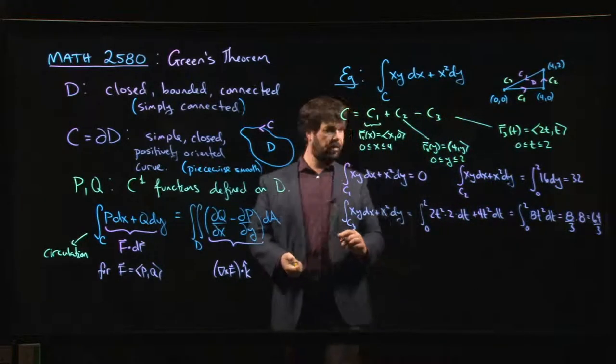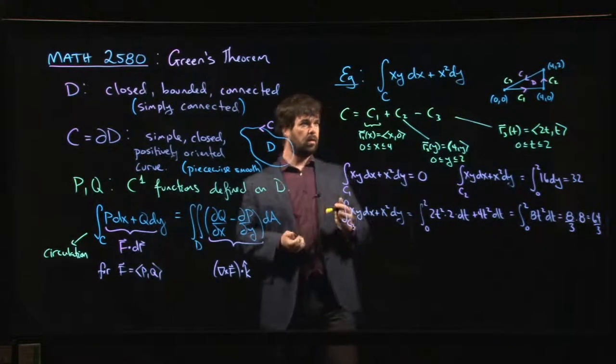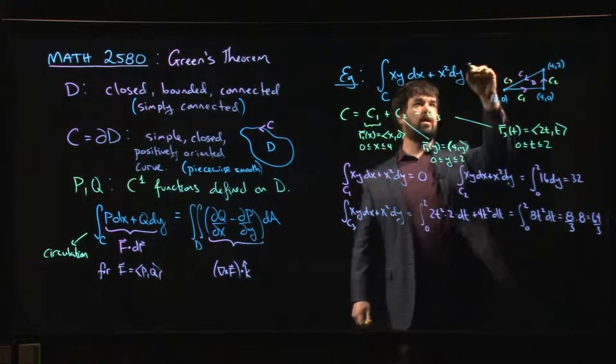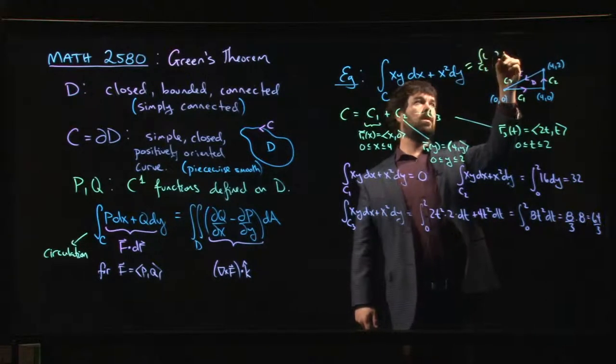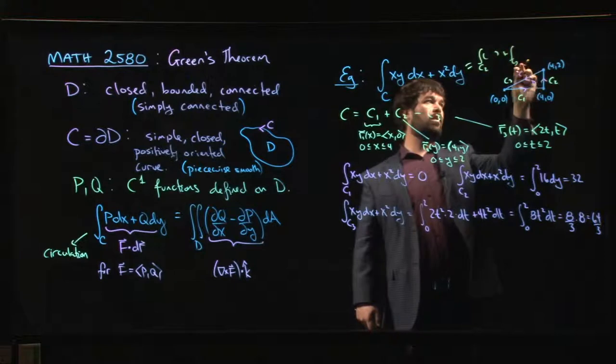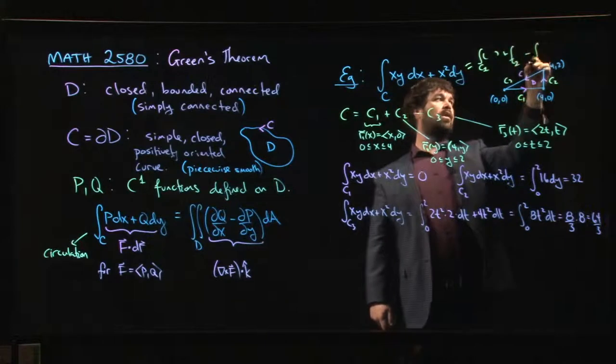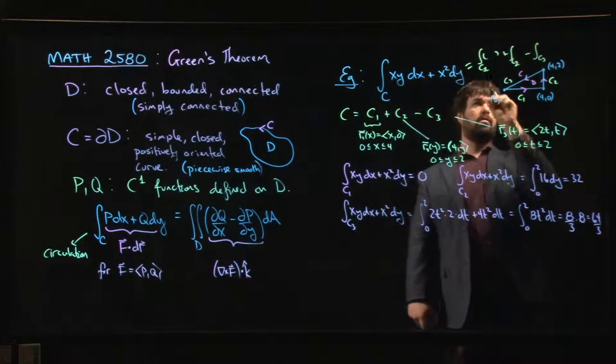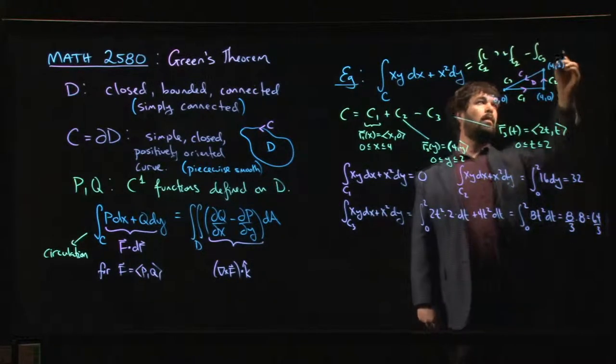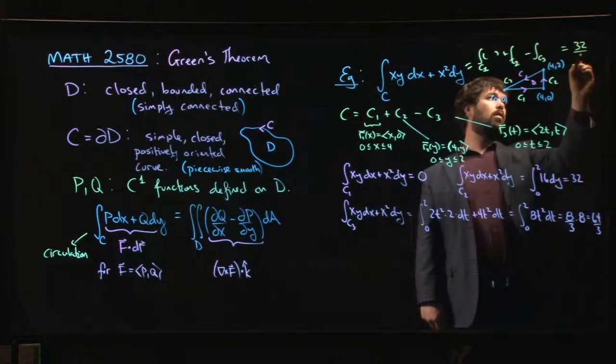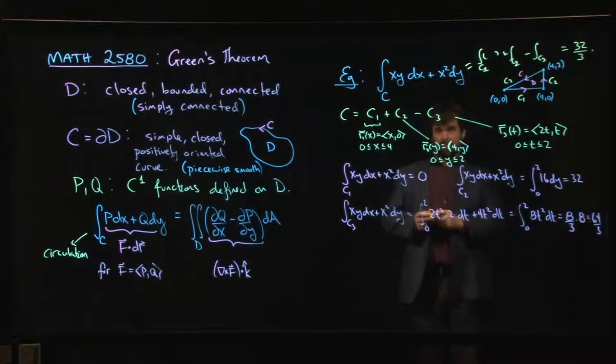And that means that the overall integral is what? So the overall integral should be, if we're doing it directly, it's going to be the integral along c2 plus the integral along c3, sorry, along c1, c1, c2 minus the integral c3. So it's 0 plus 32 minus 64 over 3. So if you work that out, you end up with a value of 32 over 3 for the integral. All right, so that works out.